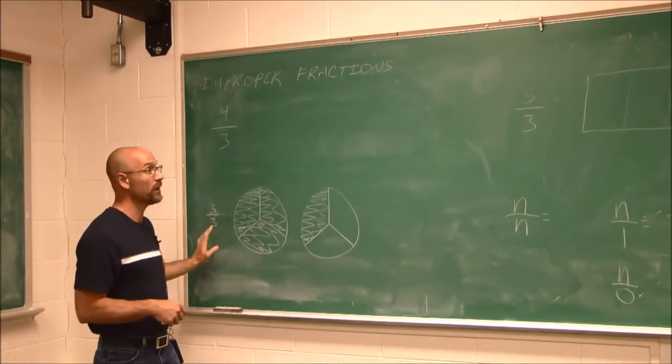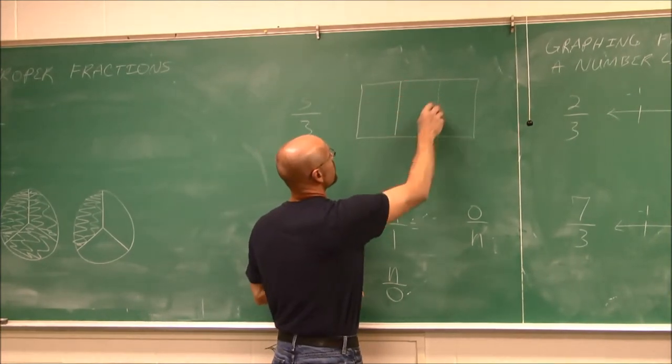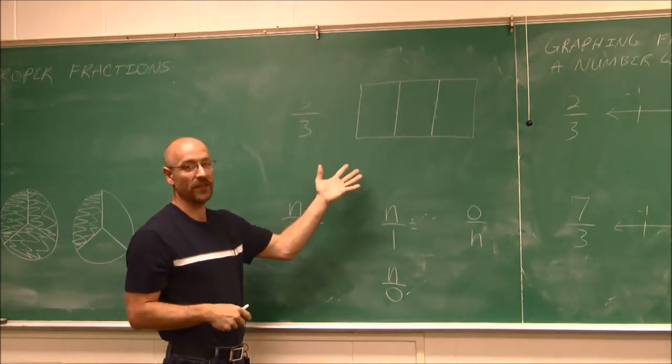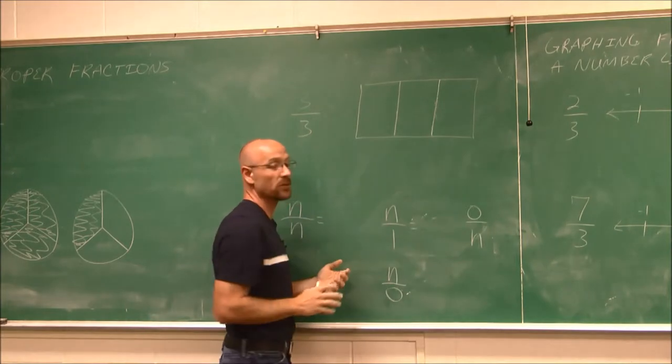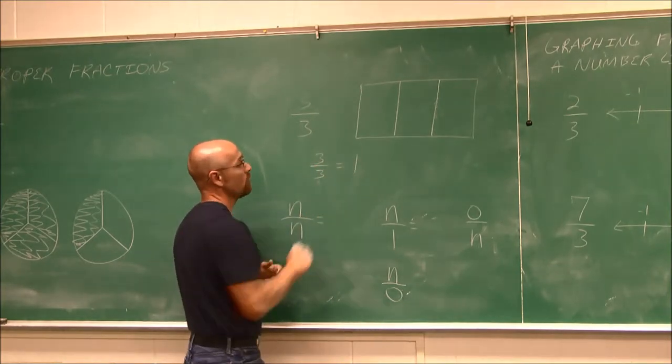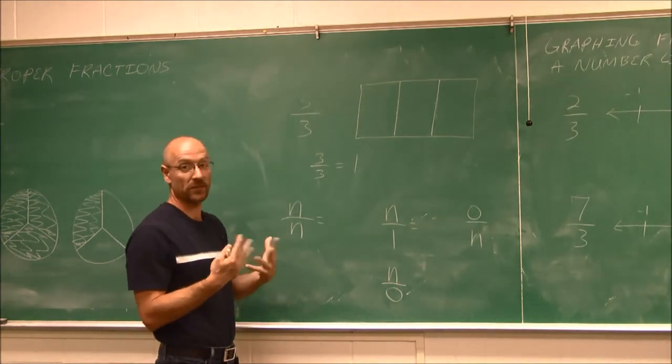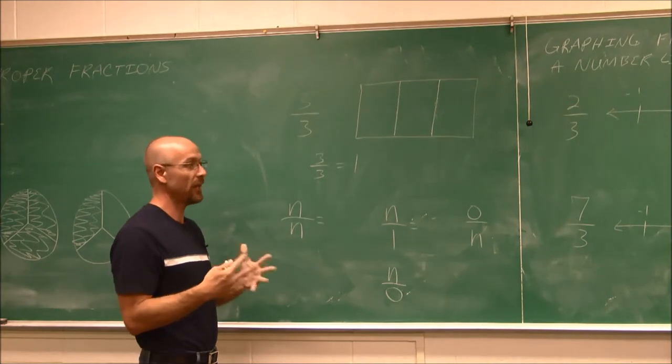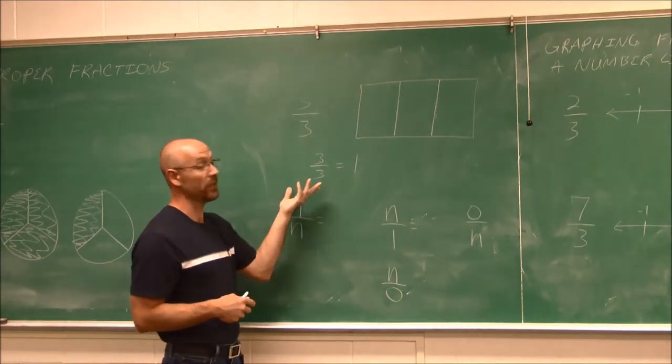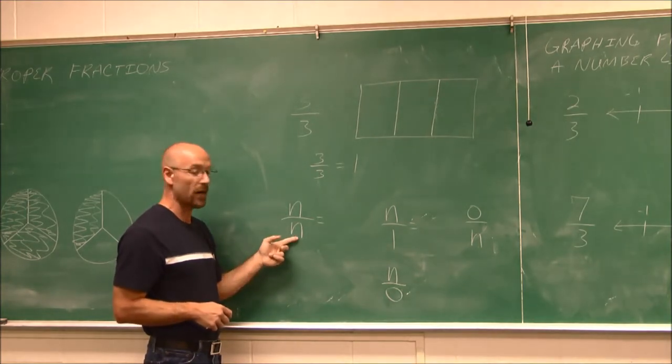And one pizza isn't going to be enough, and two might be too many. But we order two anyways because we don't want anyone to go away hungry. And we find out, of my friends, I ate one third, and someone else ate a third, and someone else ate a third, and someone else ate a third. We still have a remainder of pizza. We get to take some home in a little box and have cold pizza in the morning. But we represent how much pizza we consume by saying 4 thirds of my pizzas are gone. Let's explore this a little bit more. 3 thirds.